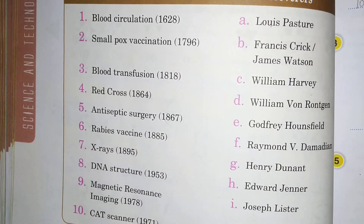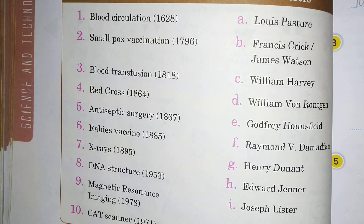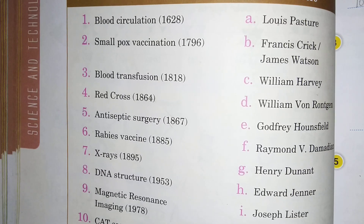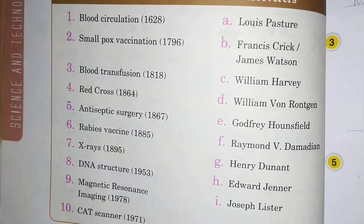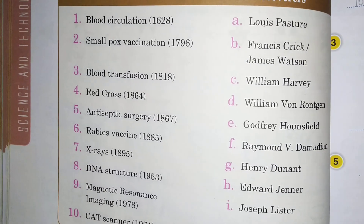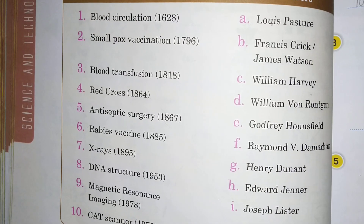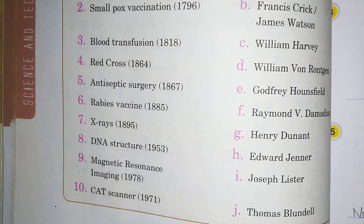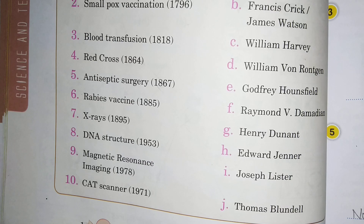Next is blood transfusion. Blood transfusion in 1818, yeh kis nai find out kya tha? That is Thomas Blundell.